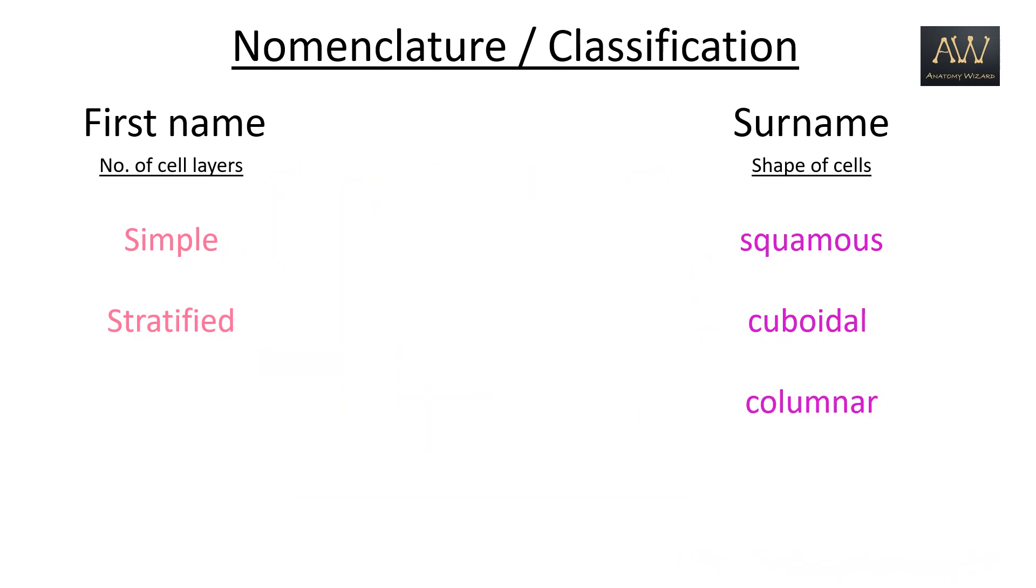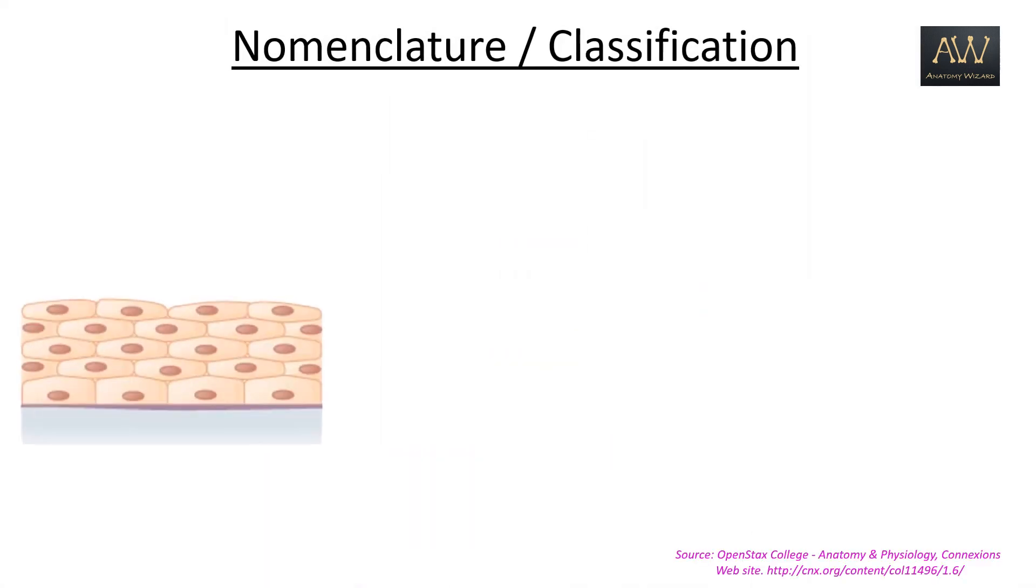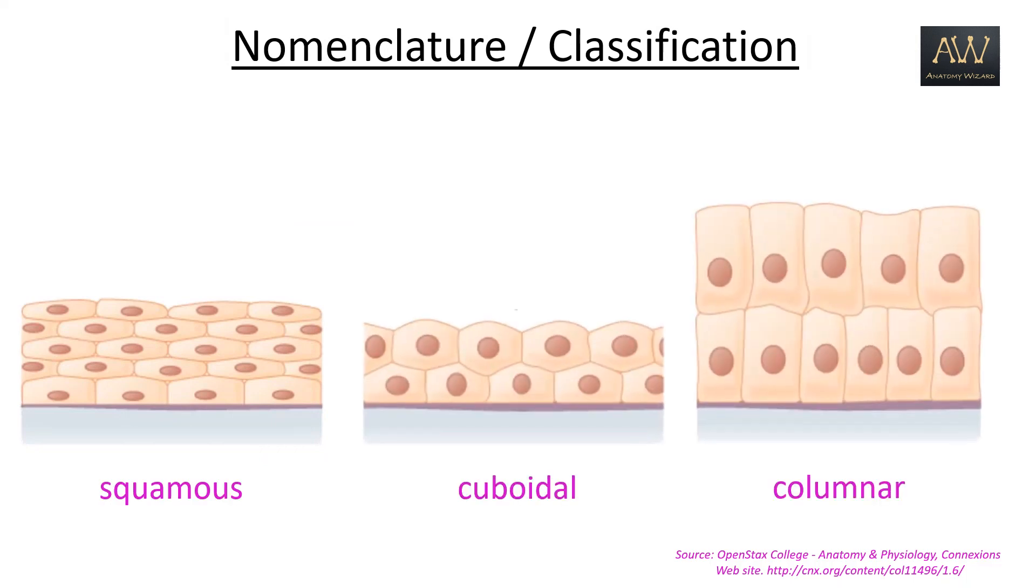Two or more layers of epithelial cells when present in a tissue is known as stratified epithelium. A stratified epithelium may again be either stratified squamous, stratified cuboidal, or stratified columnar.